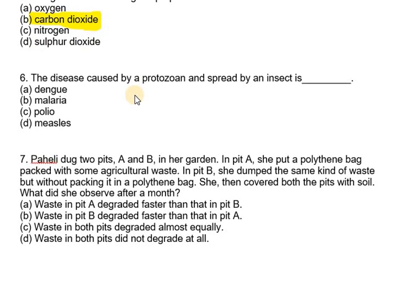Question number six says: the disease caused by a protozoan and spread by an insect is called — Dengue, malaria, polio, or measles? The answer is malaria. Malaria is caused by protozoans and it is spread by the female Anopheles mosquito.